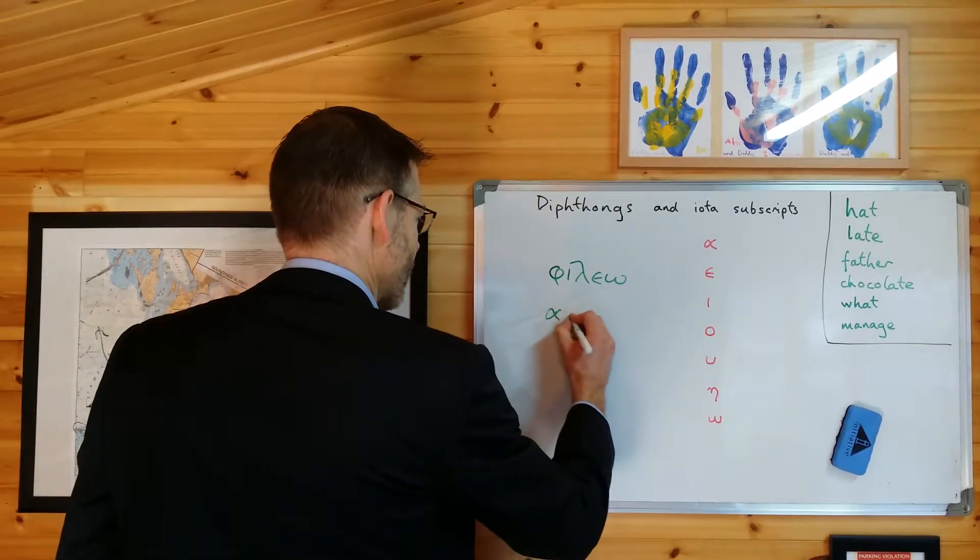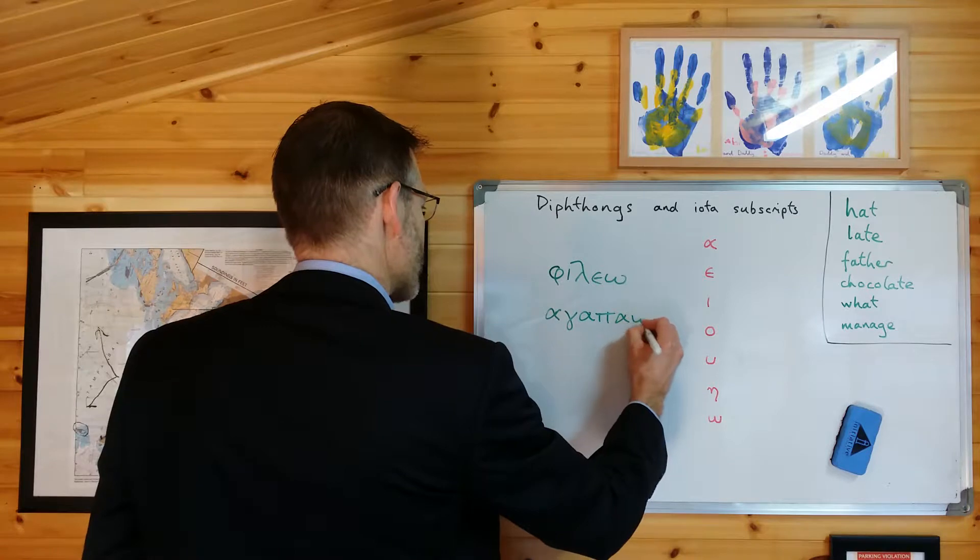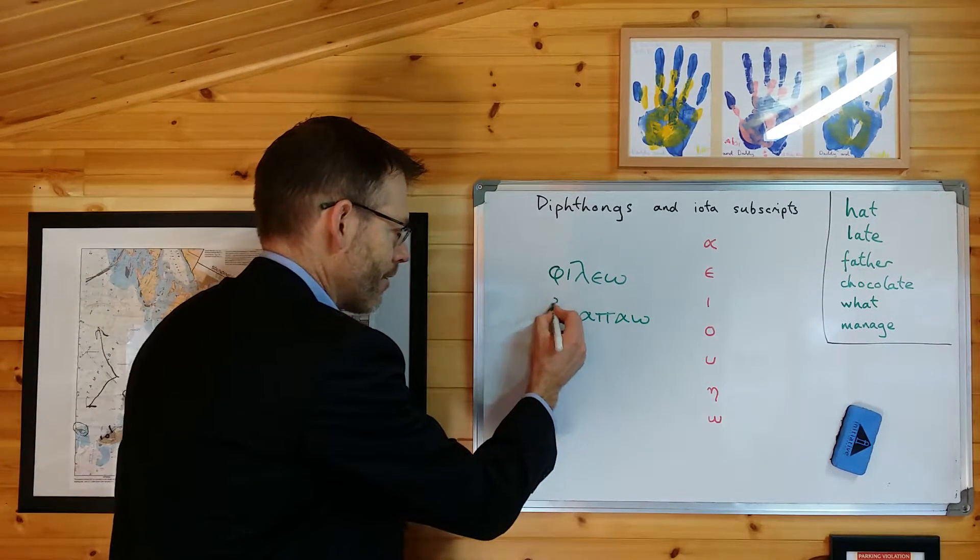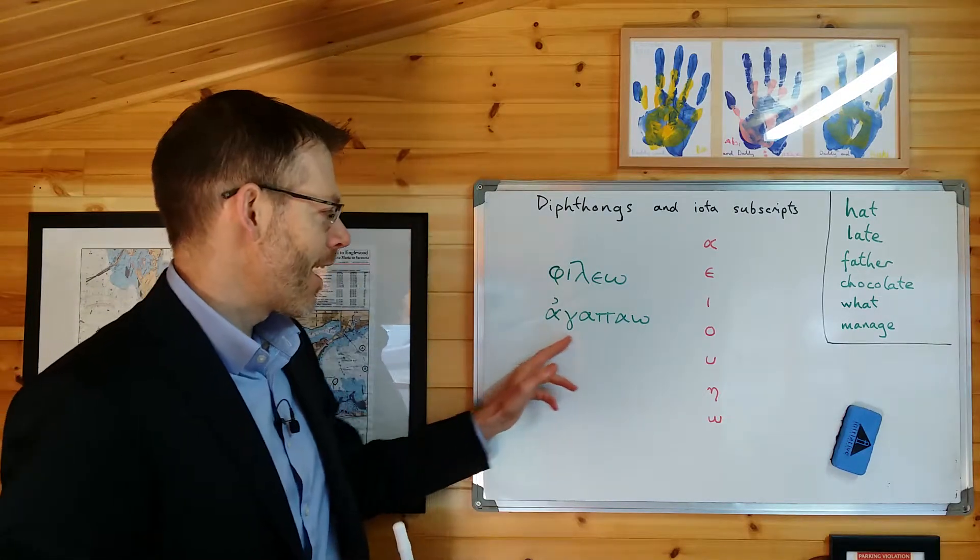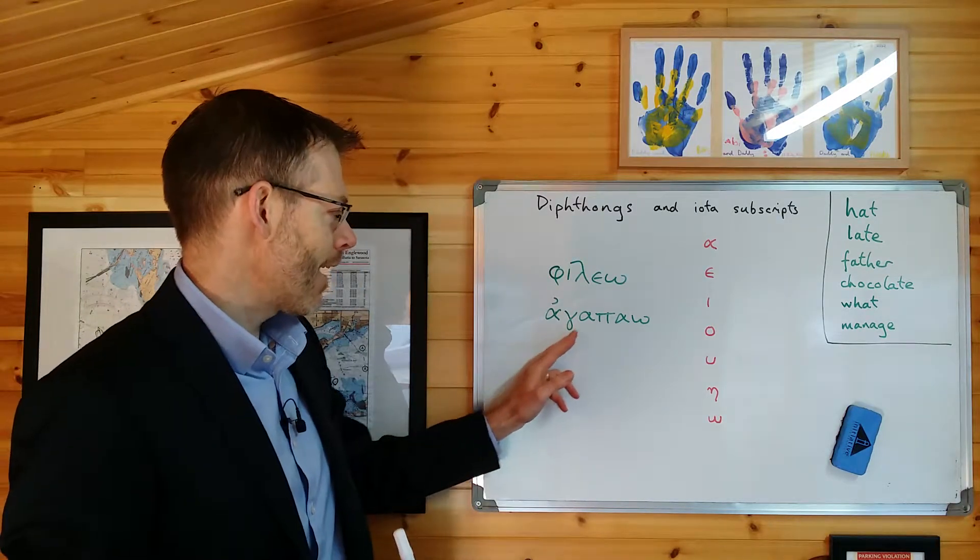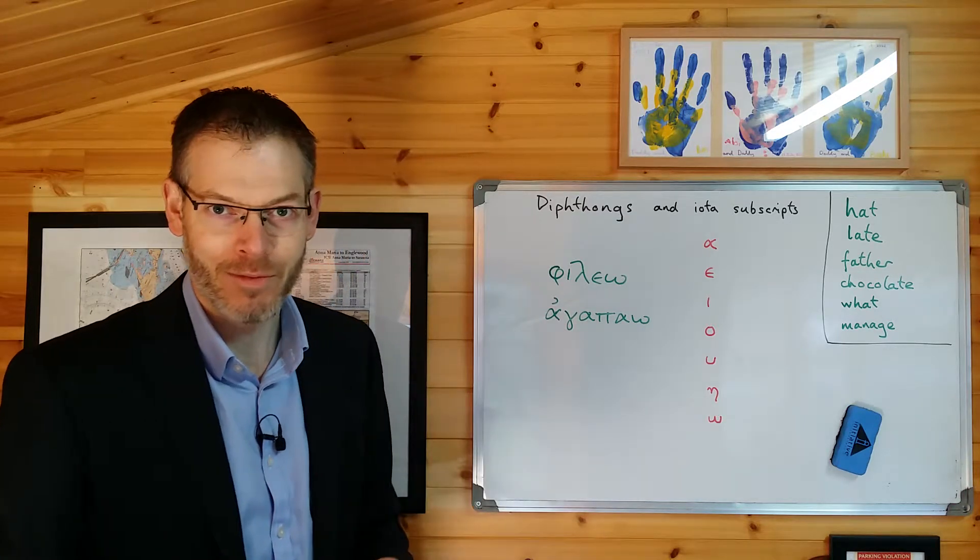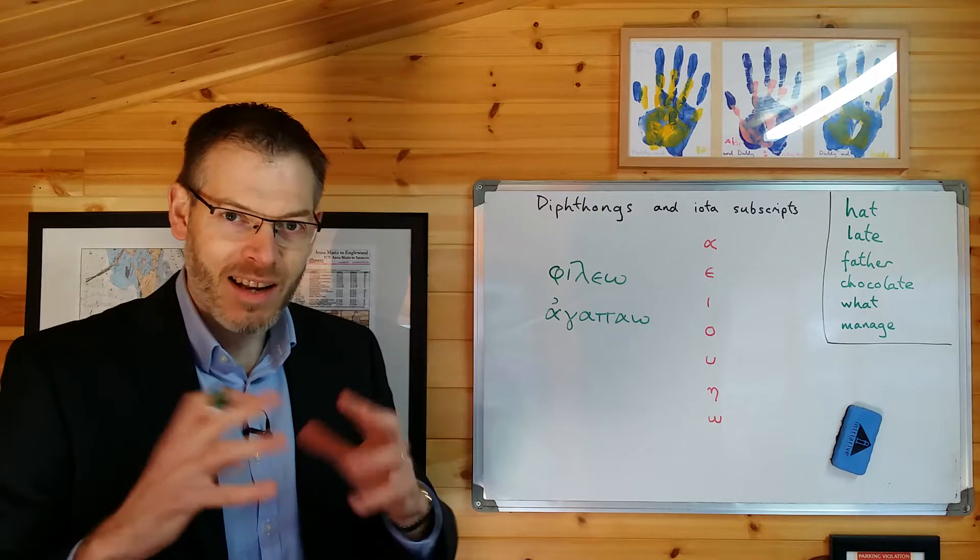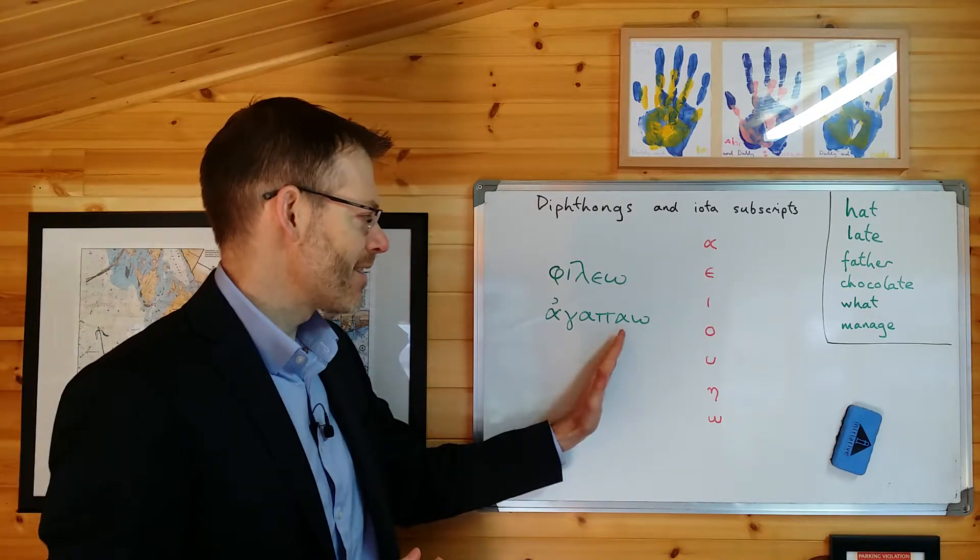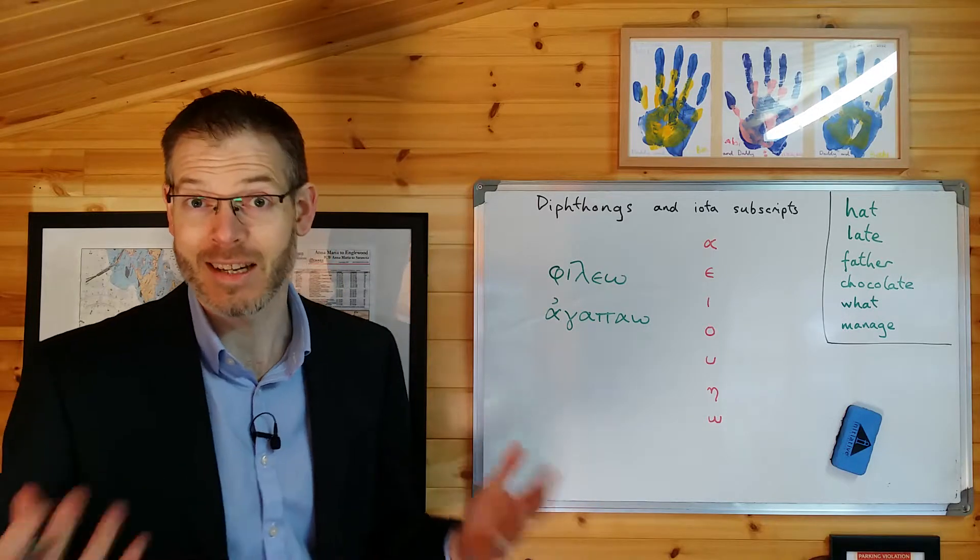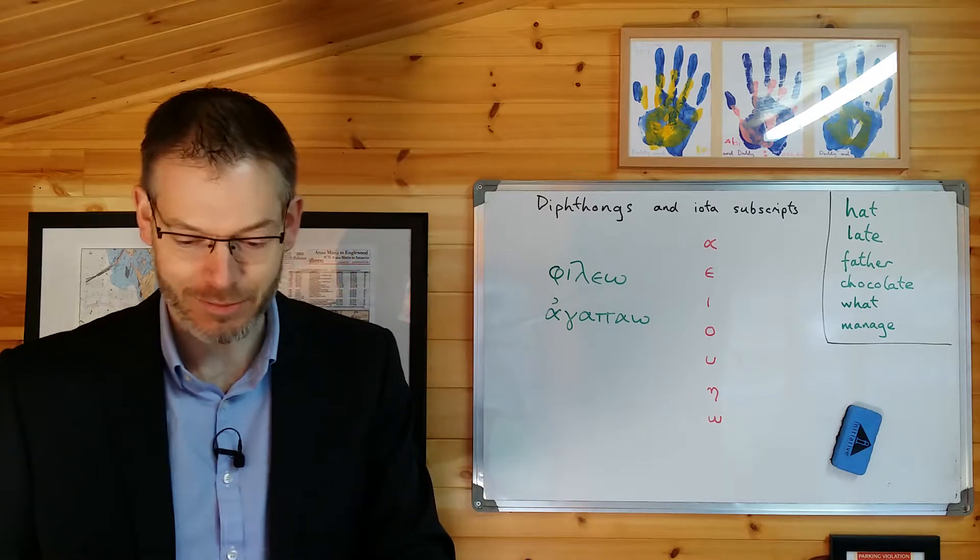Similarly, this word. Remember the breathing? Well spotted. Agapao. Not agapao, but agapao. Agapao at the end. It also means I love. Another word meaning I love. In other words, we slightly artificially pronounce the words in such a way that we highlight distinct vowel sounds, unless it's a diphthong, and if it's a diphthong, we pronounce it as a single sound, like it says in Duff.